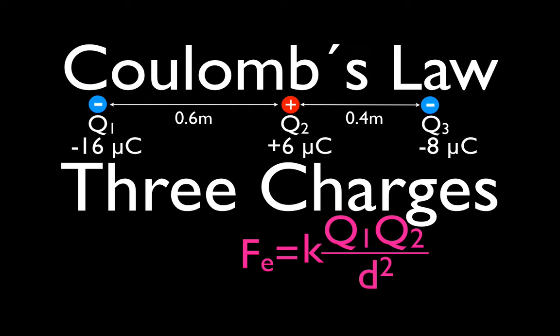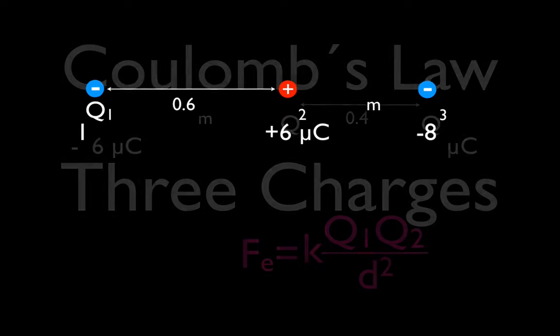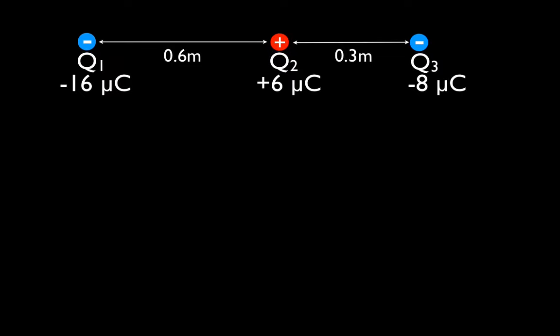In today's video, we are going to do a Coulomb's law problem. In this problem we have three charges, and all three charges lie on a straight line. We have Q1 which is minus 16 microcoulombs, Q2 which is plus 6 microcoulombs, and Q3 which is minus 8 microcoulombs. We are going to determine the net force — the magnitude and the direction — of the force on Q3 from Q1 and Q2 combined.